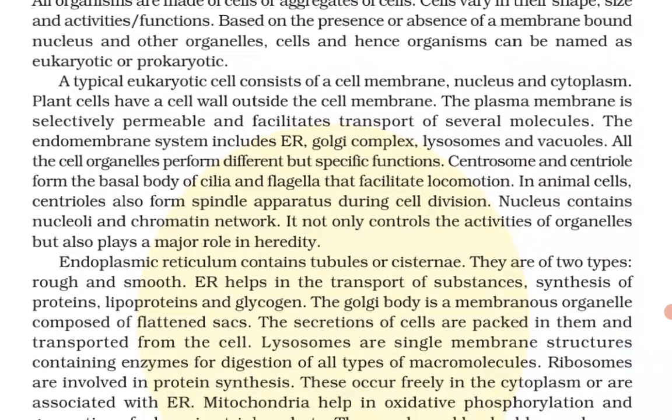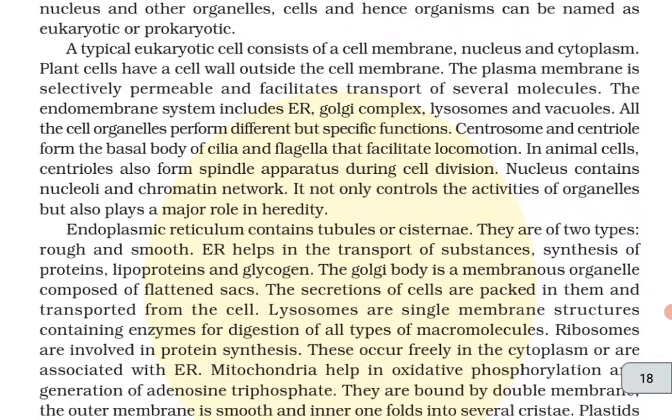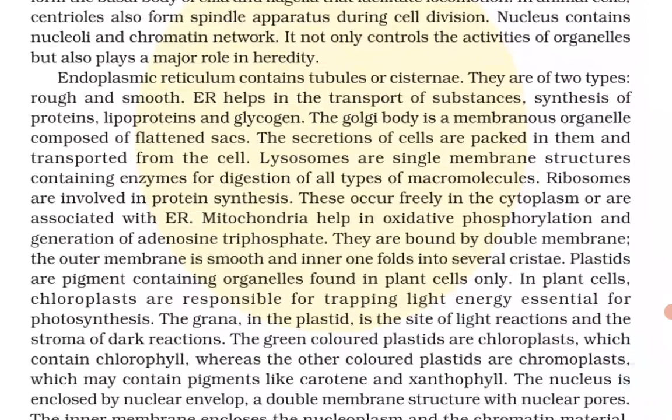A typical eukaryotic cell consists of a cell membrane, nucleus, and cytoplasm. Plant cells have a cell wall outside the cell membrane. The plasma membrane is selectively permeable and facilitates transport of several molecules. The endomembrane system includes ER, Golgi complex, lysosomes, and vacuoles. All cell organelles perform different but specific functions. Centrosome and centrioles form the basal body of cilia and flagella that facilitate locomotion in animal cells; centrioles also form the spindle apparatus during cell division.